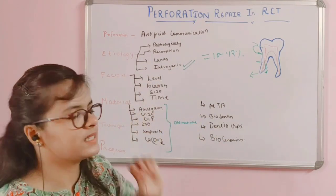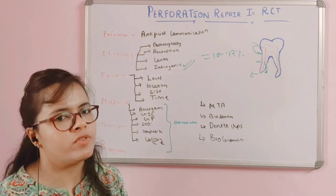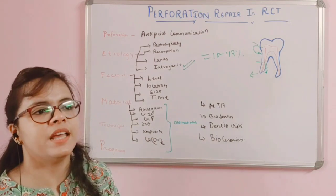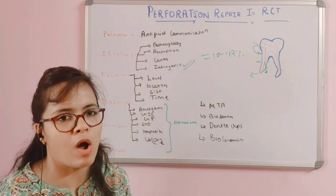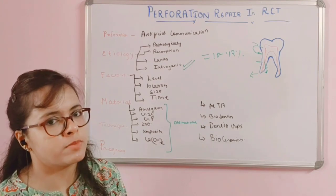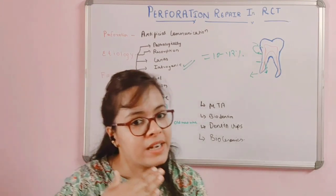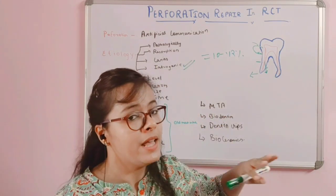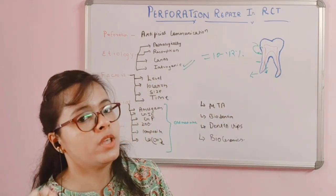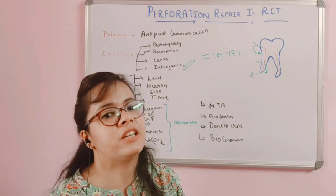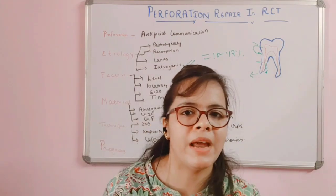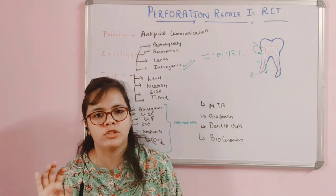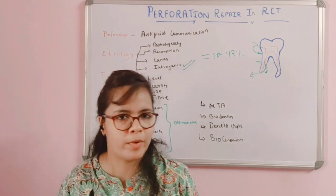Third is size — the larger the size of the perforation, the worse the prognosis of the tooth. Fourth is time. If the perforation has just occurred, it is best to treat it as soon as possible. As time passes, the artificial communication allows the tooth to stay connected to the outside environment, infection travels, and no matter how much repair, antibiotics, or triple antibiotic paste you place, the tooth will have a poor prognosis.